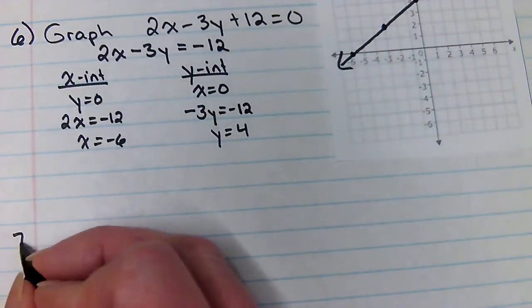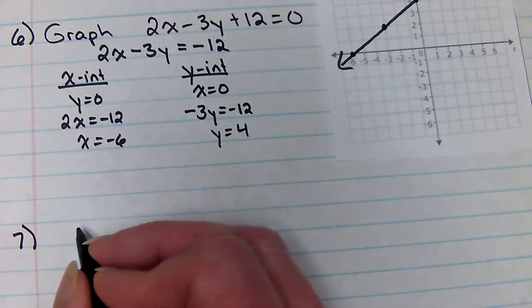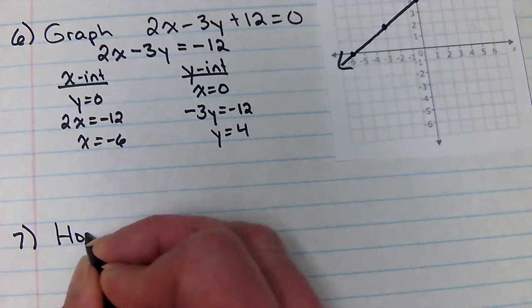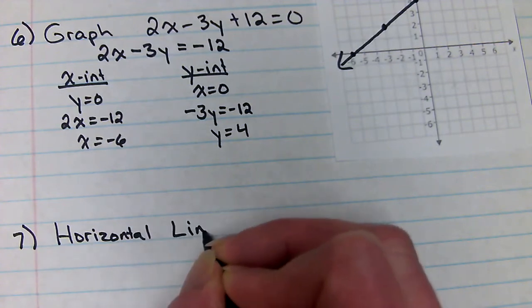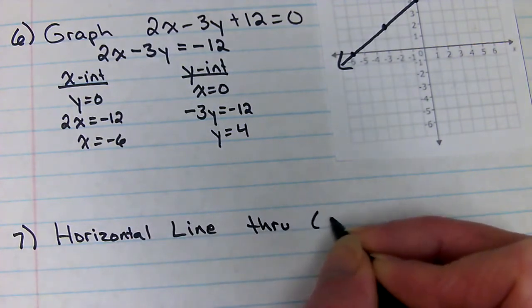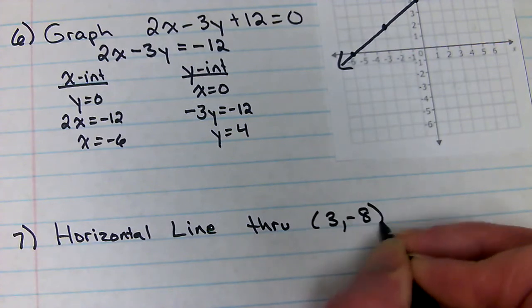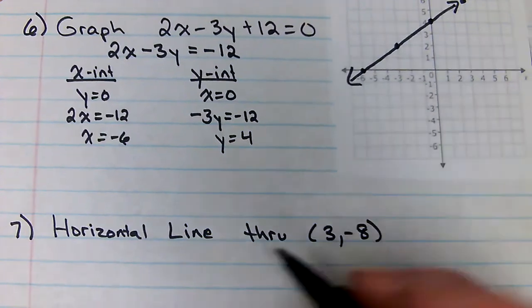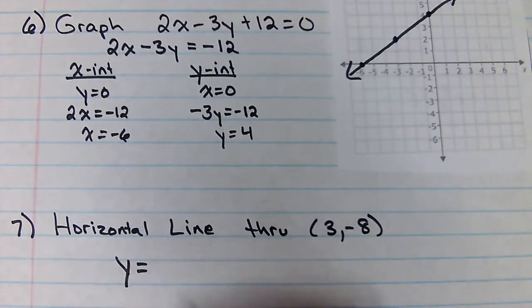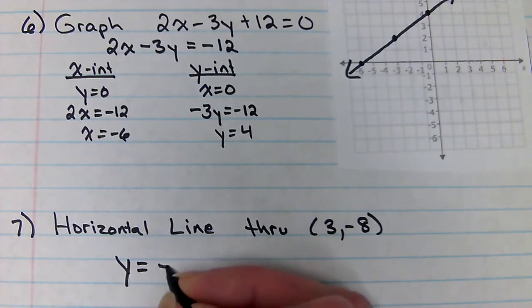Number seven, the horizontal line through three negative eight. Now let's remember a horizontal line is going to be across like that. It's going to be a y equals. So guess what? That's just y equals negative eight.